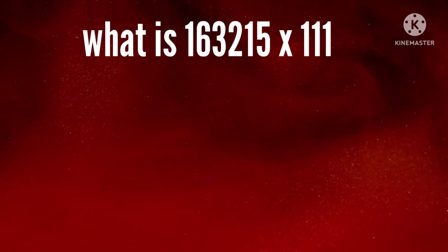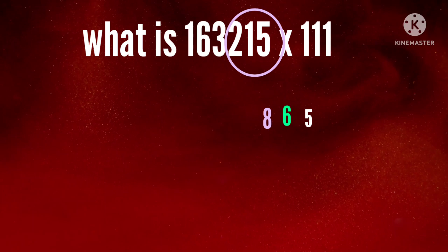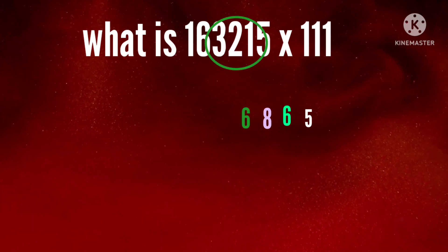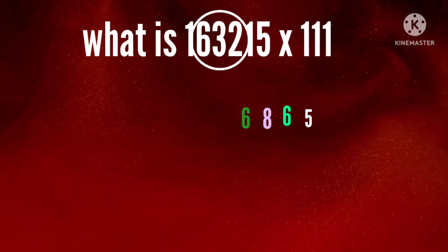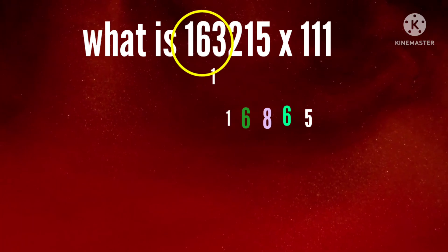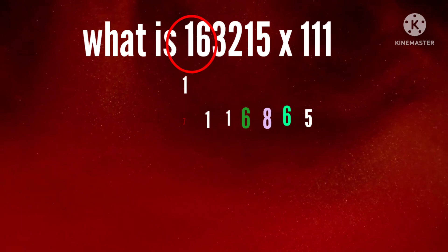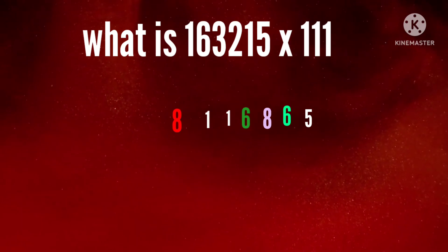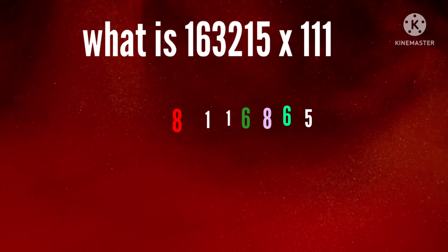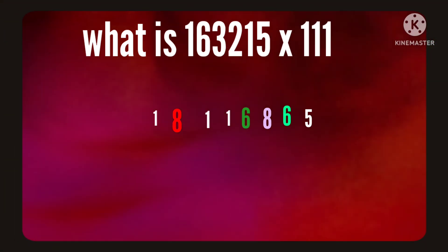What is 163215 into 11? Unit place 5. 5 plus 1 is 6. 2 plus 1 plus 5 is 8. 3 plus 2 plus 1 is 6. 6 plus 3 plus 2 is 11, 1 carry over. 1 plus 6 plus 3 is 11, 1 carry over. 1 plus 6 is 7, 7 plus 1 is 8. Finally, the first digit is 1. Therefore, answer is 18116865.